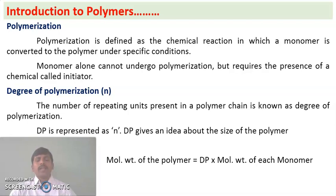Polymerization is defined as the chemical reaction in which monomers are converted into a polymer under specific conditions. Monomers alone cannot undergo polymerization — they need a catalyst or an initiator to get converted to form a polymer.